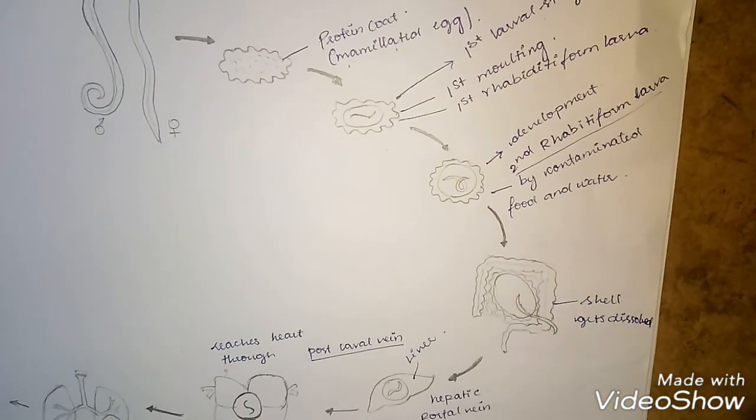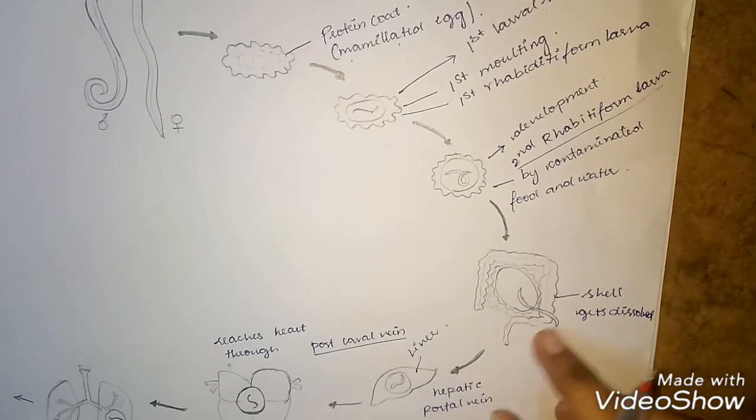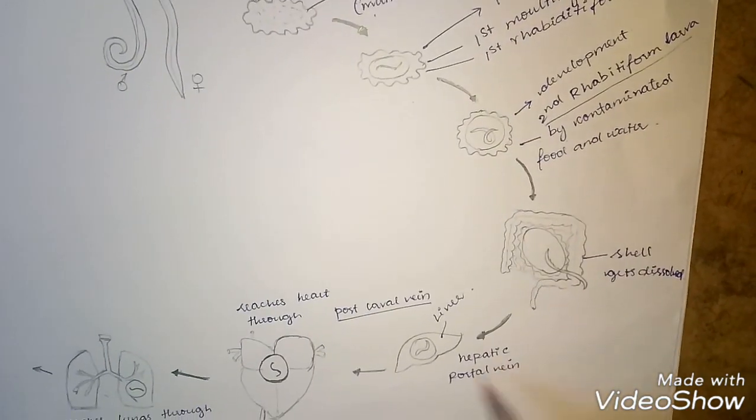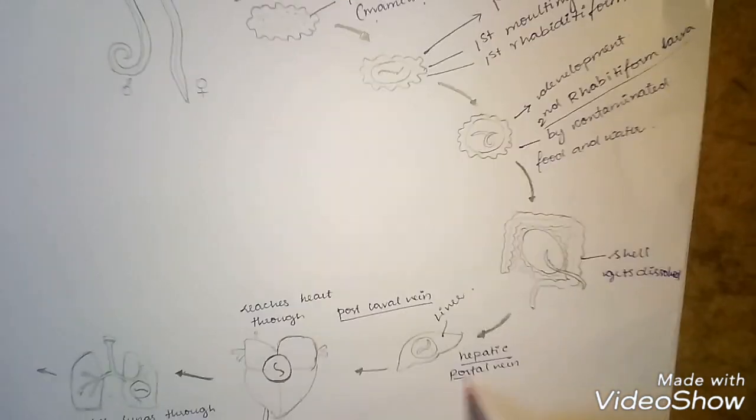It enters a new host through contaminated food and water, directly entering the small intestine. The shell around the Ascaris egg gets dissolved in the small intestine.